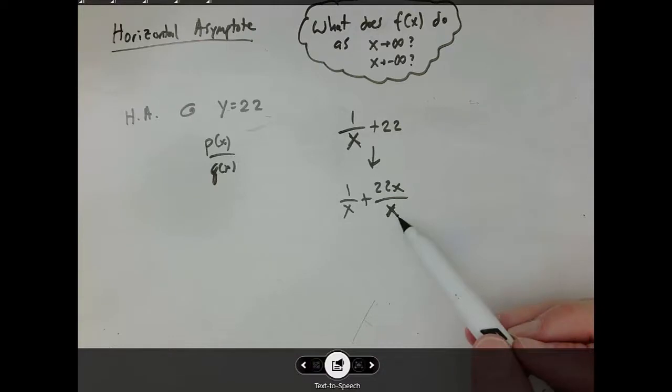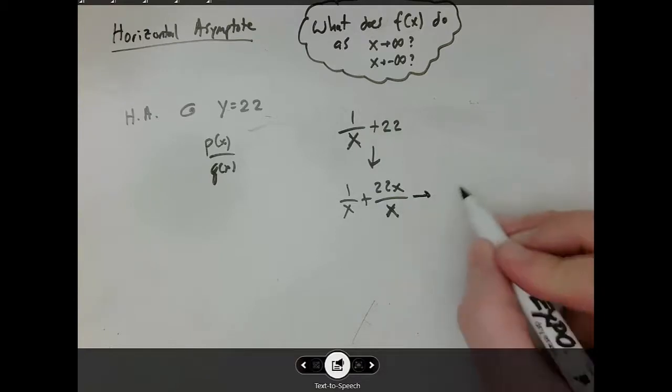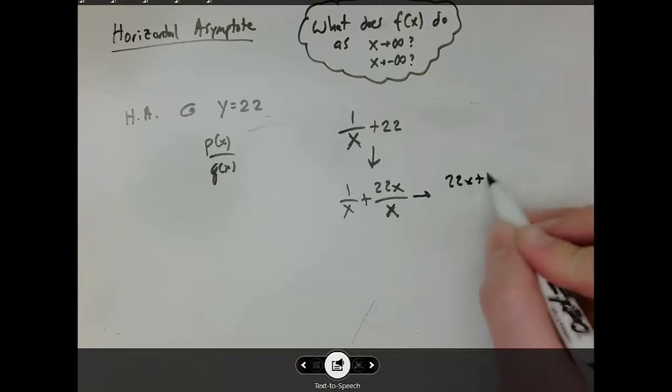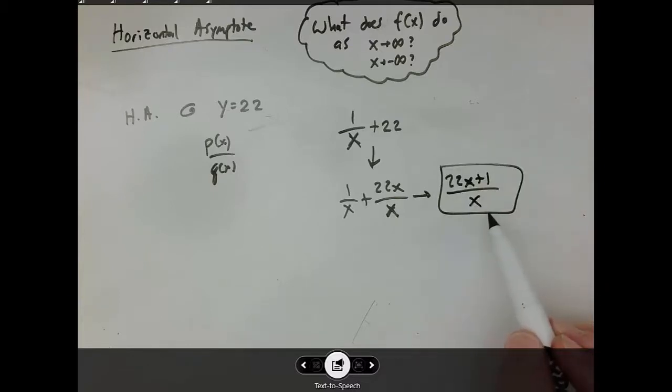And we didn't even change the domain of the original function because x equals zero is already not in the domain. But now we can combine them and we've got 22x plus one divided by x. And so now this is a proper rational function that has a horizontal asymptote at 22.